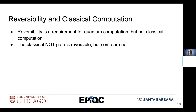Reversibility is a requirement for quantum computation, and this is pretty unique. It's one of the things that makes quantum computation a little bit different from classical computation, because classical computation is not inherently reversible.